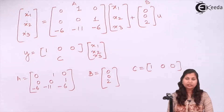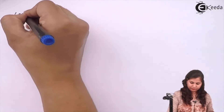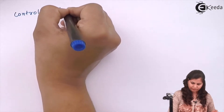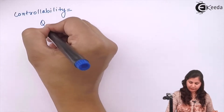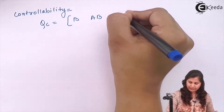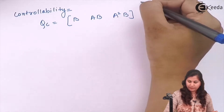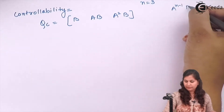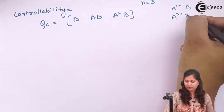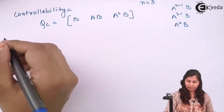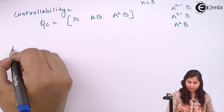Now check the controllability and observability. First we will check controllability. For controllability we have to determine Qc. Qc will be [B, AB, A²B] because there are three state variables, so n−1 = 2, meaning we determine up to A²B. B is already known; now calculate AB.